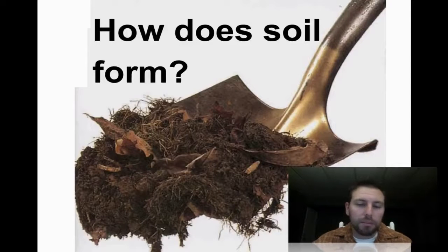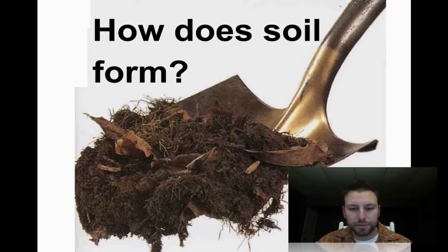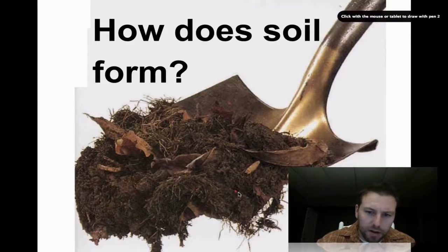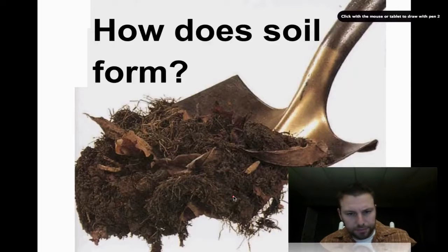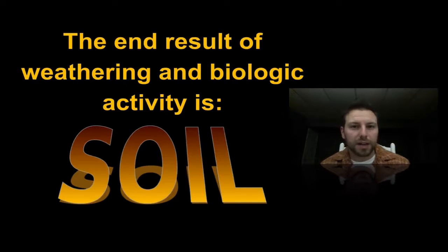Welcome back to another screencast by your earth science teacher, Mr. Stano. Today we're going to look into soil formation. If we look at this picture, we can see a number of different things. We have some leaves, some grass, and what appears to be some sediments. The end result of weathering and biologic activity is soil. When we saw the leaves and grass, that's all biologic material. We also saw sediments, and we know sediments are the end result of weathering. So we combine them, we get soil.